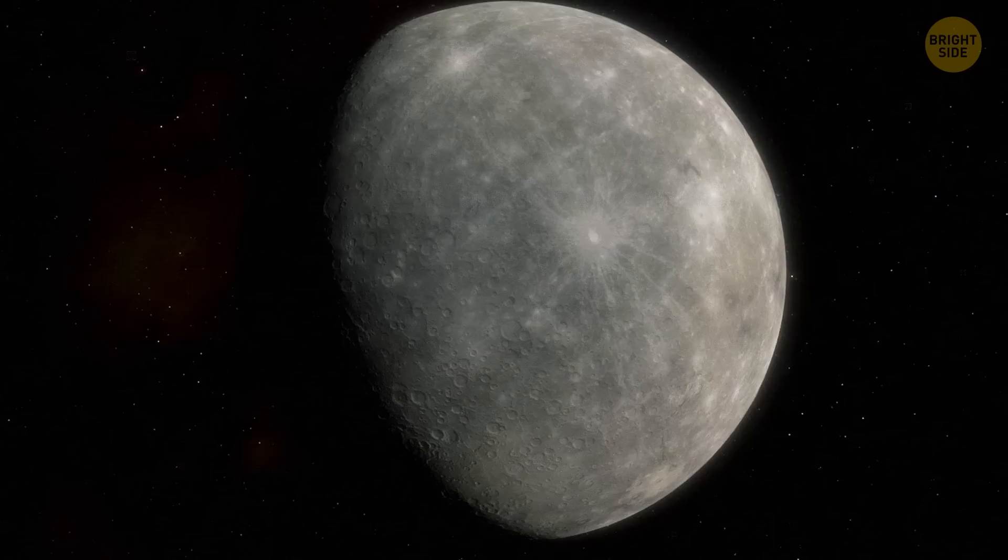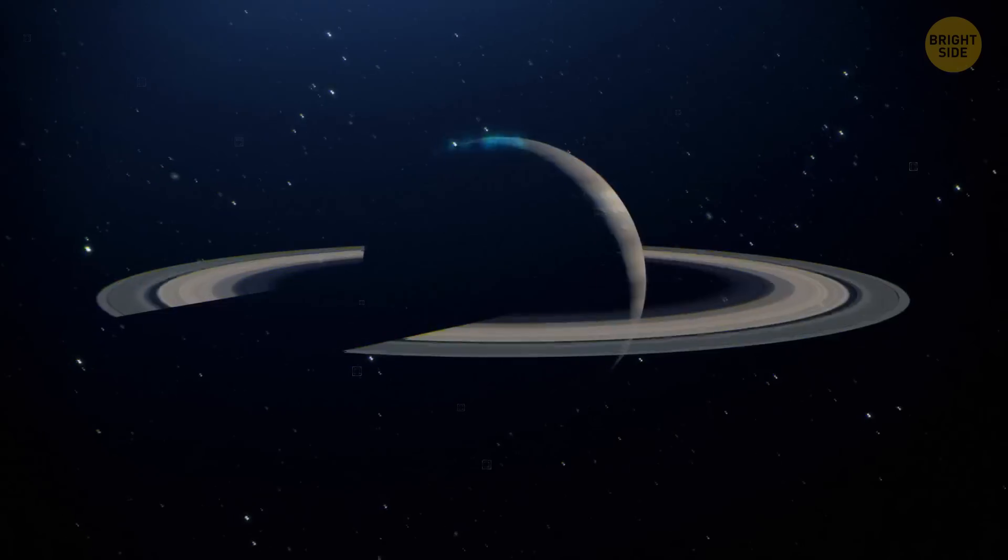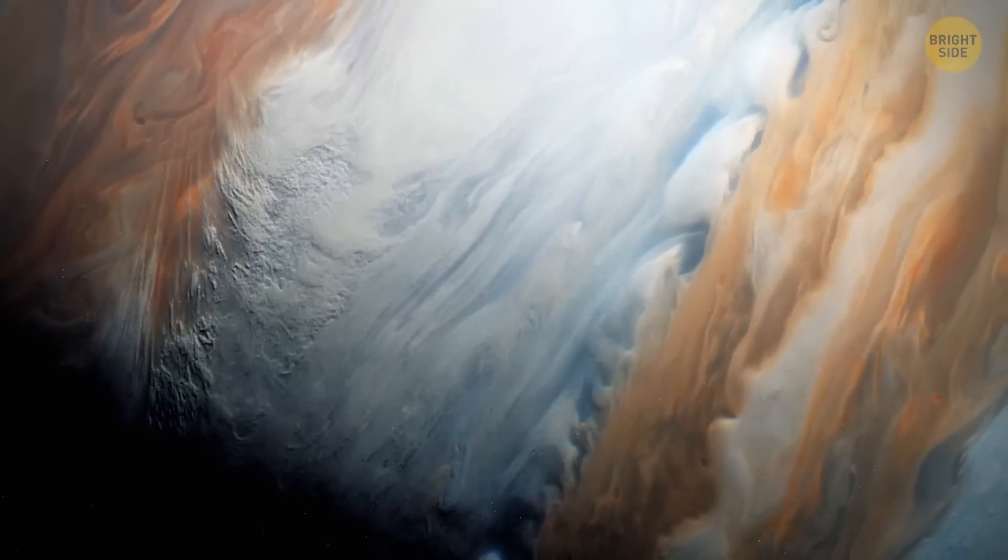In our solar system, those are Earth, Mars, Mercury, and Venus. You can't set your foot on the rest of them, since they're gas giants.